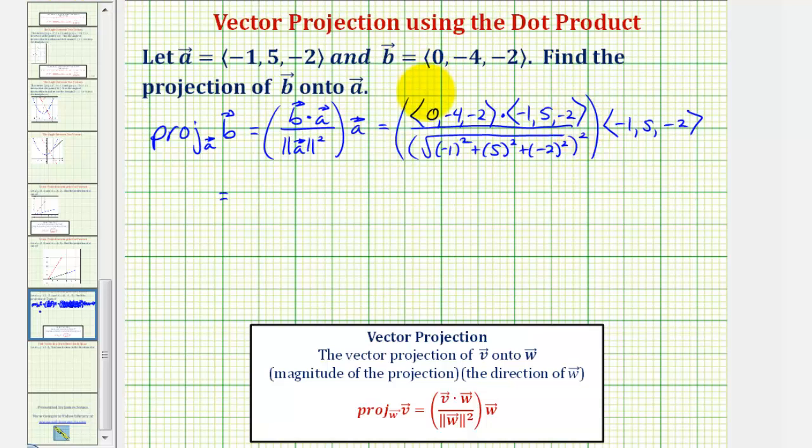So now we'll find the dot product. We'd have zero times negative one, that's zero, plus negative four times five, that's negative twenty, plus negative two times negative two, so we have plus four.